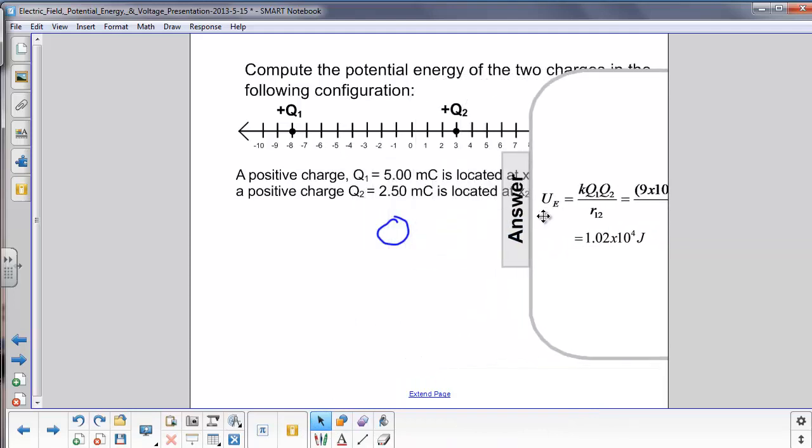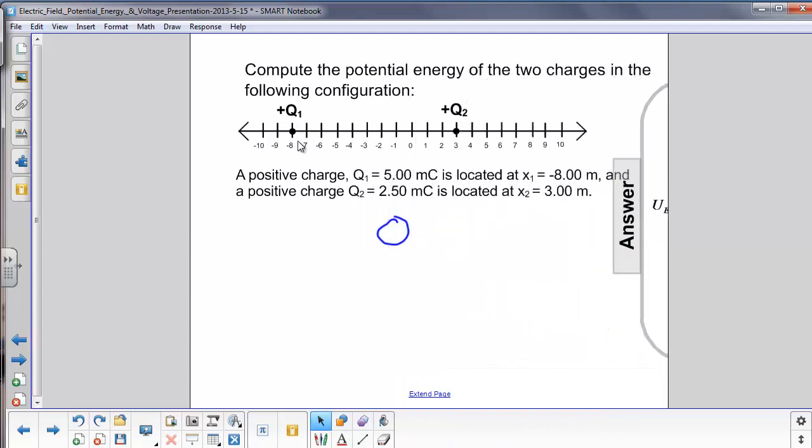So how do we find the distance between those two charges, negative 8 and 3? You can either just count this or you can do 3 minus a negative 8. In either case, you get 11.